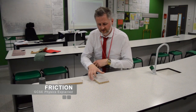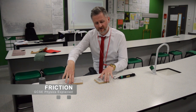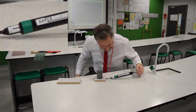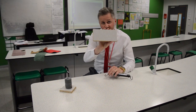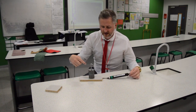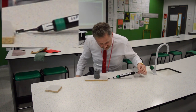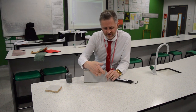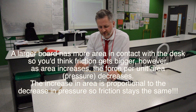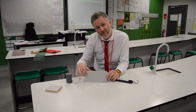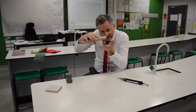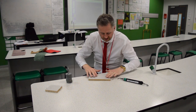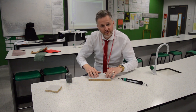The surface area does not affect the size of the friction. As I pull that, that's two newtons. If I use a larger board with the same mass on the back, that's still two newtons. The reason for that is because it's a bigger area, so the force is spread out more, and so this surface is not pressed down as much.